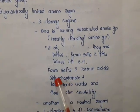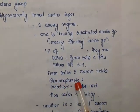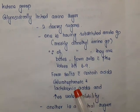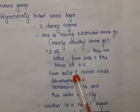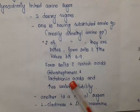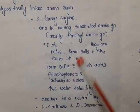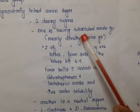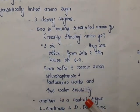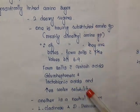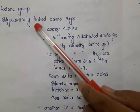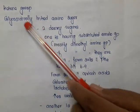Macrolides form salts with pKa values between 6 to 9. Examples of acids they form salts with include glucoheptanoic acid and lactobionic acid. Because of this salt formation, water solubility is increased. One sugar is an amino sugar and the other is a neutral sugar, and both sugars are connected to the lactone ring by means of glycosidic linkage.